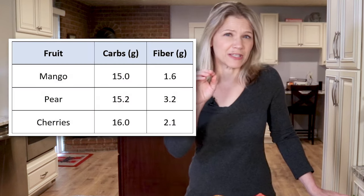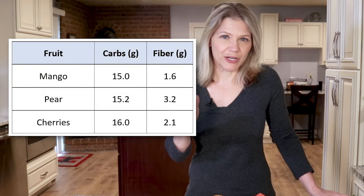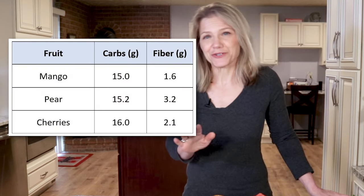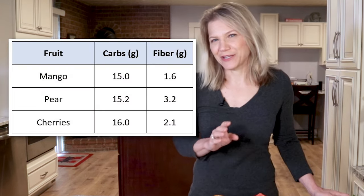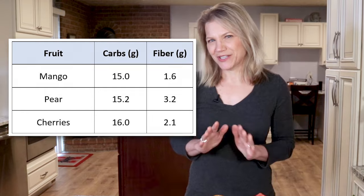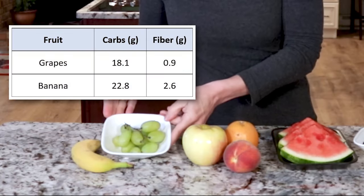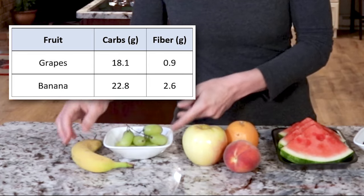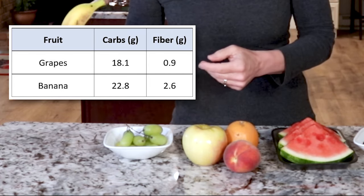As we continue to evaluate fruits, we see the total carb content creep up with fruits like mangoes, pears, and cherries. And two fruits that you might be disappointed to learn are high in carbohydrates and fructose are grapes and bananas.